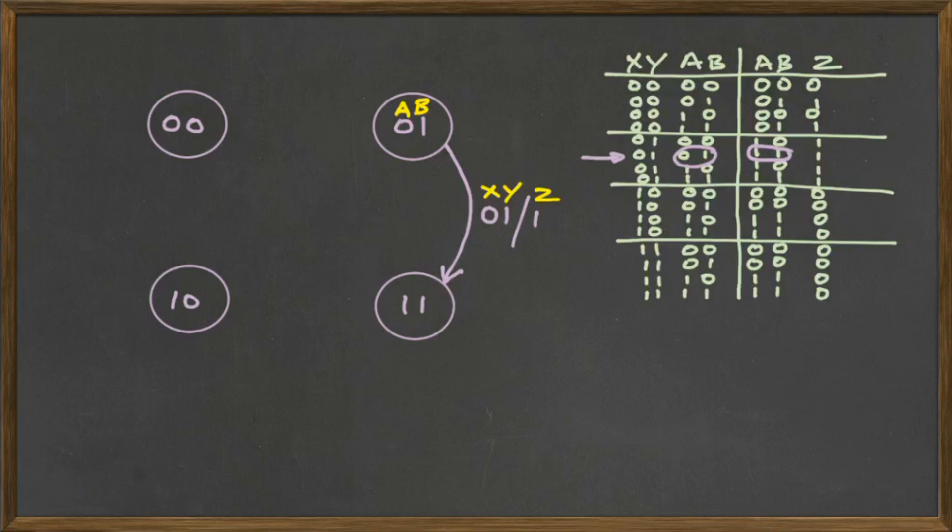And also we keep them in order so X and Y would represent the first and second digit. And on the other side of the slash for the outputs, we only have one, so we would have Z. But if there was more than one output, we would represent them in the alphabetical order that they appeared in the output. So if we have W, X, Y, and Z as the output, we would write 1, 0, 1, 1. And the first one will relate to the W.